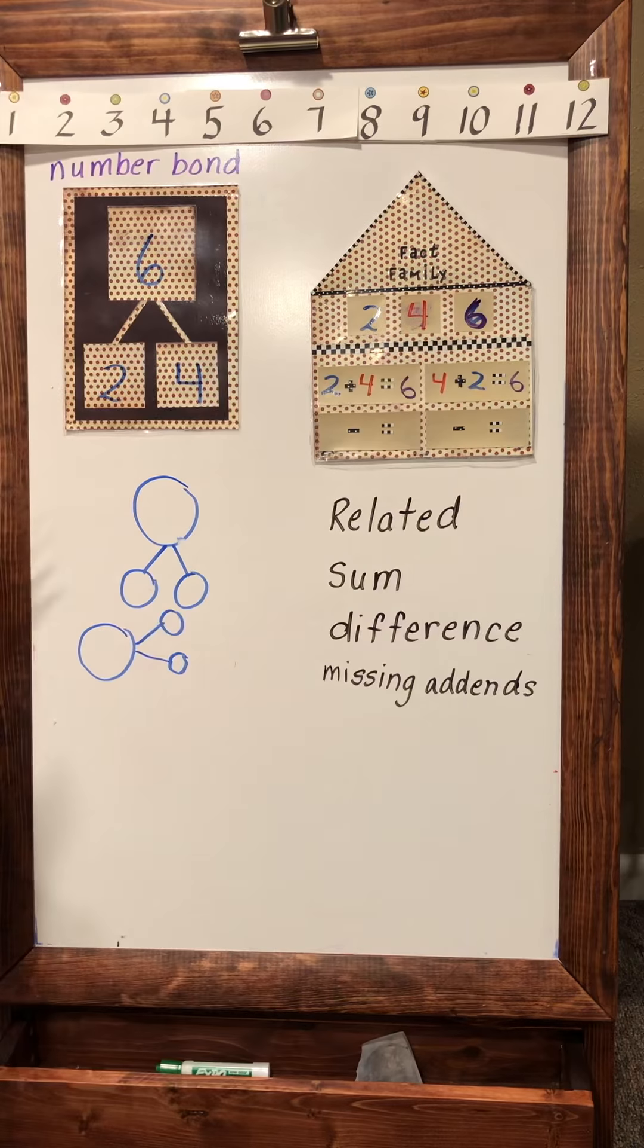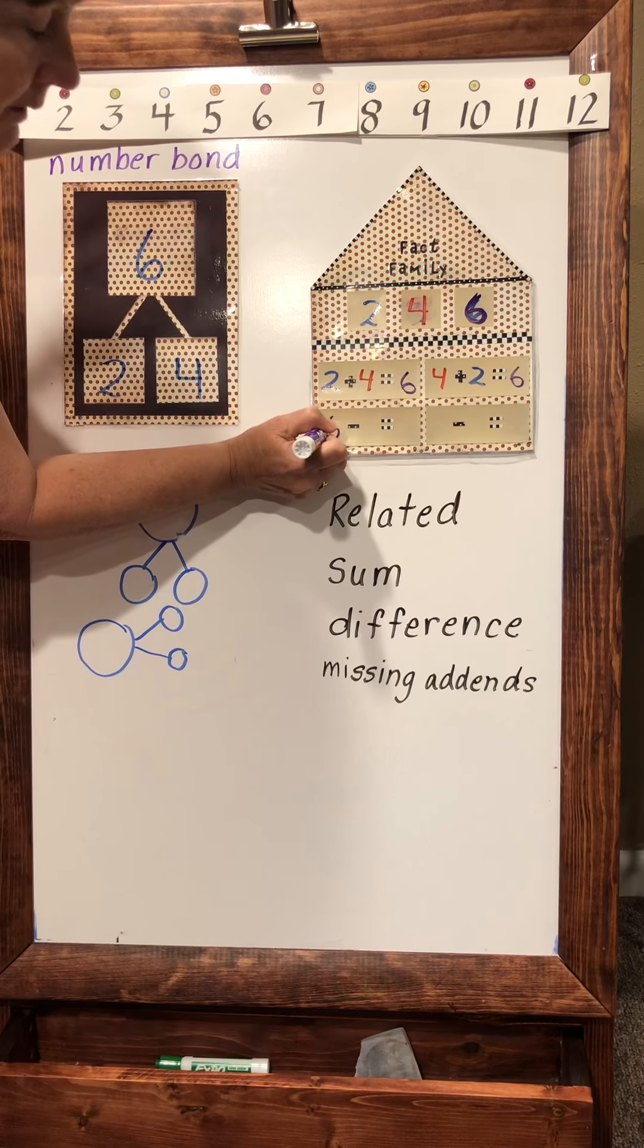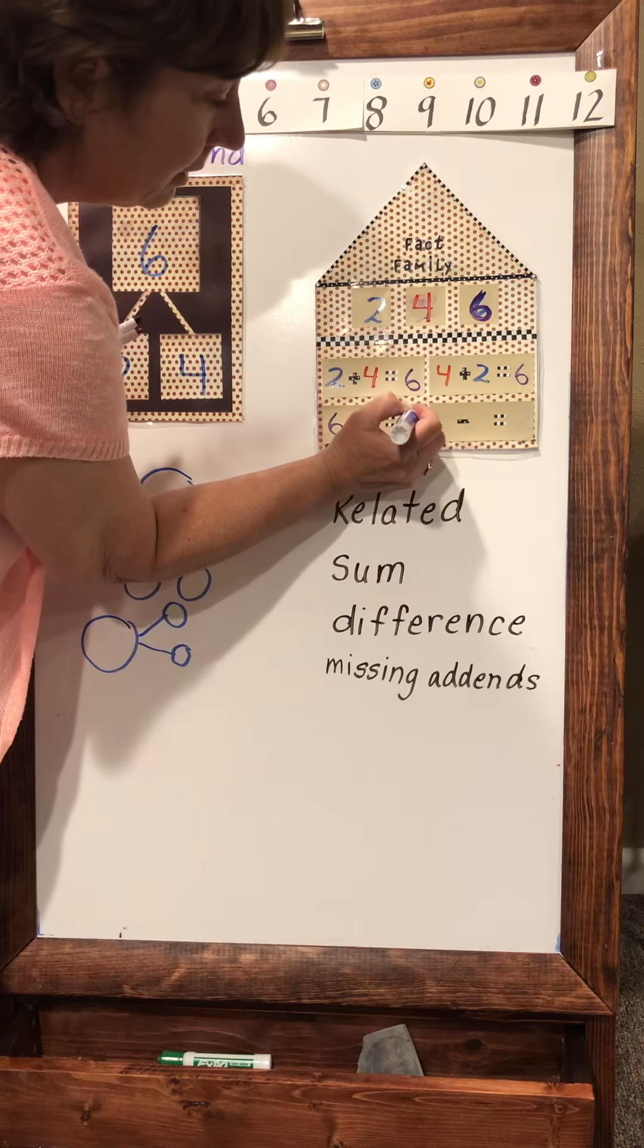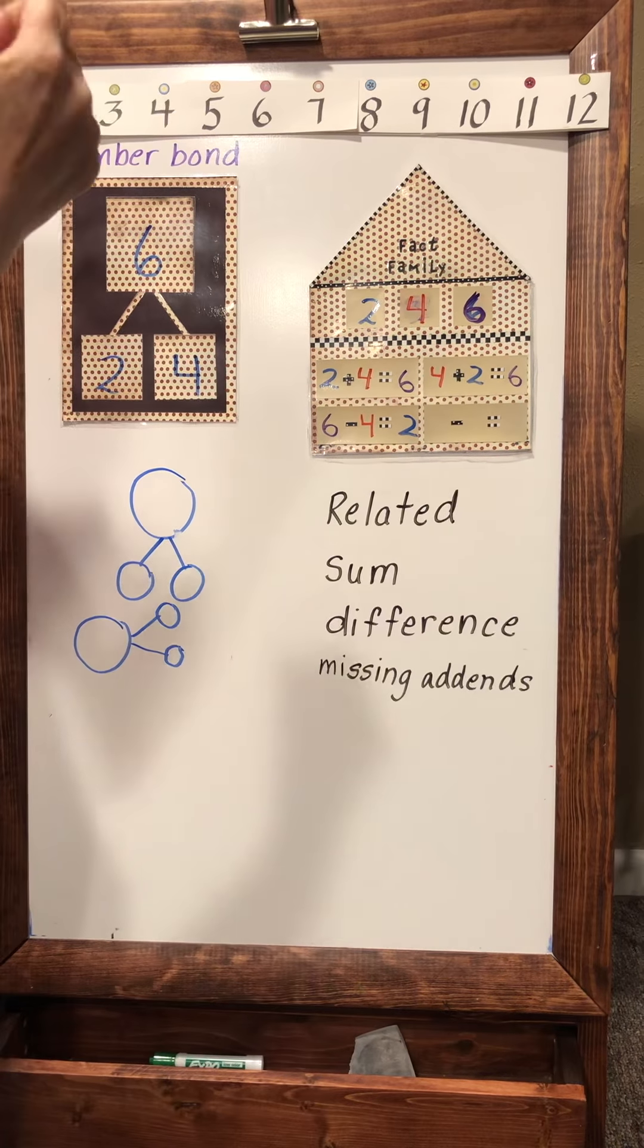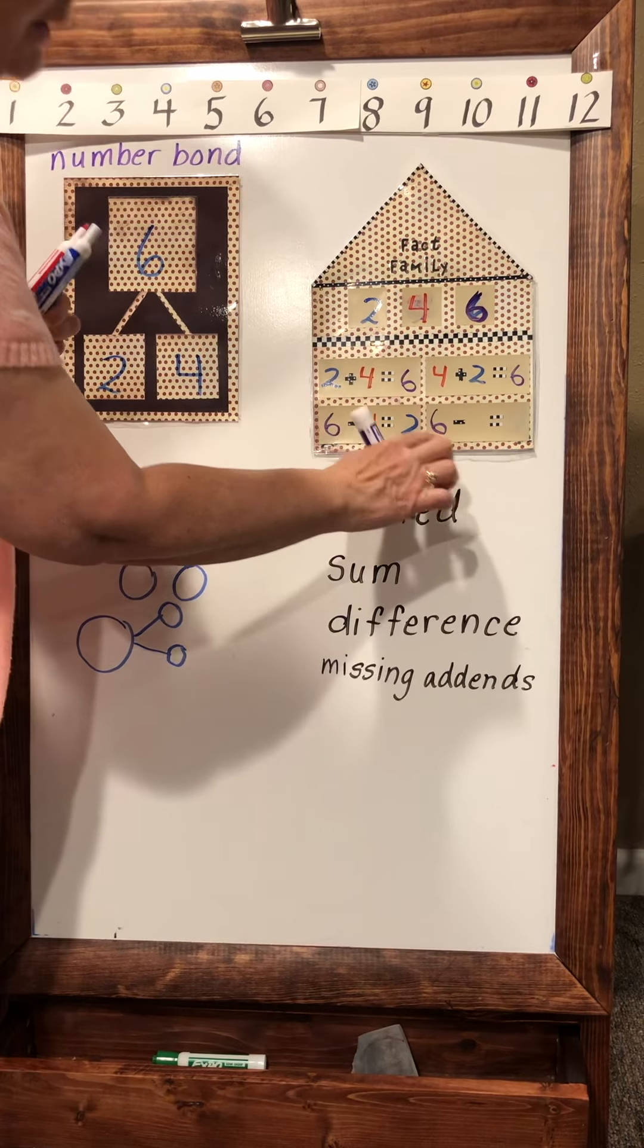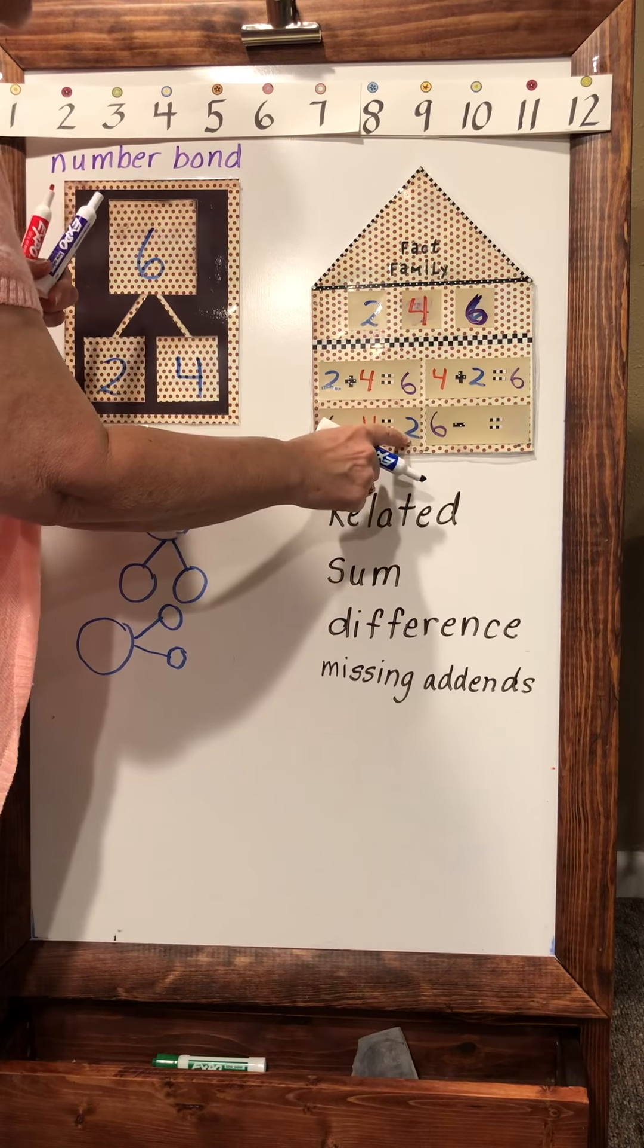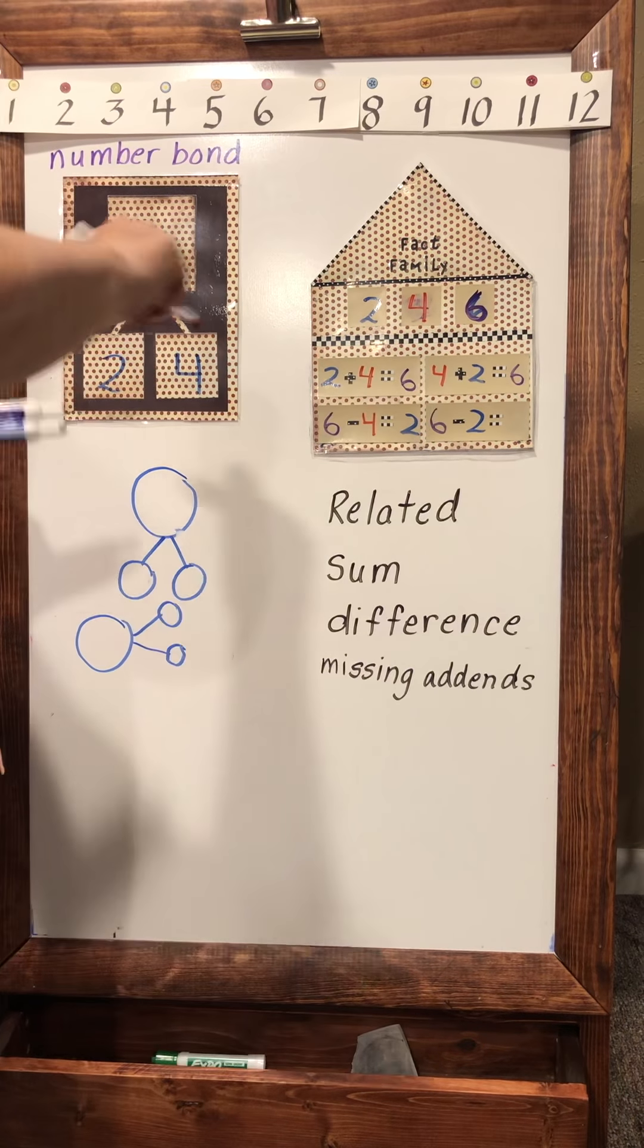Now remember boys and girls, when we start our subtraction we have to look at our three numbers and start with the big number. The big number is the six, you can take away the four to get your two again. When you're doing the subtraction, big number, so you'll want to start with your six again. Look, the six is the same at the beginning. This time though, instead of using the four to subtract because it would be the same sentence, you want to use the difference, the two, and then this time the four will be the difference in your number sentence.